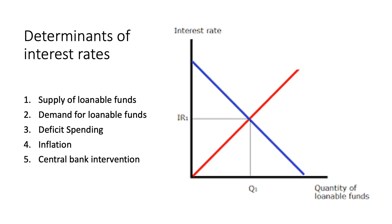So we've looked at the effects of changes in interest rates on consumers and producers, but what causes interest rates to change in the first place? There are five main reasons: supply of loanable funds, demand for loanable funds, deficit spending, inflation, and central bank intervention. A simple way to look at the factors affecting the rate of interest is to look at what is called the loanable funds market — simply the market for loans in the economy.